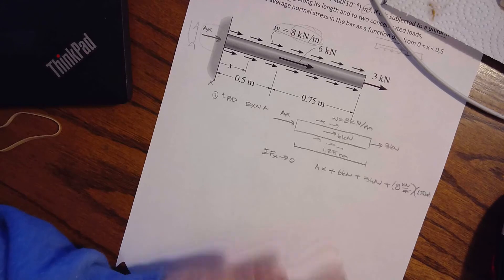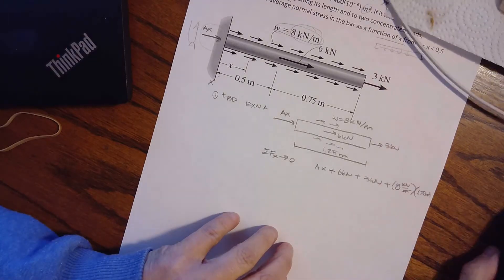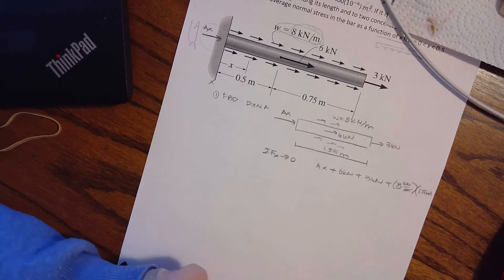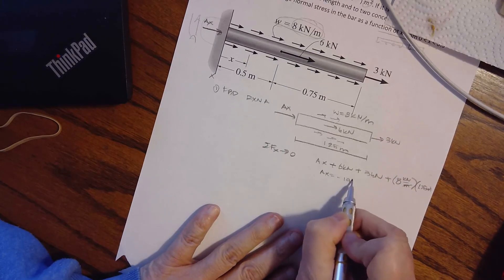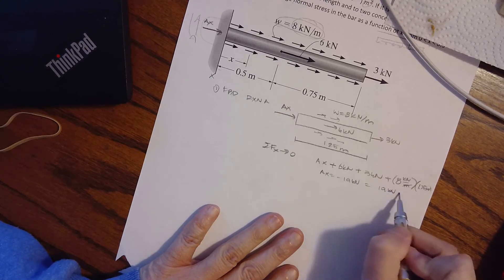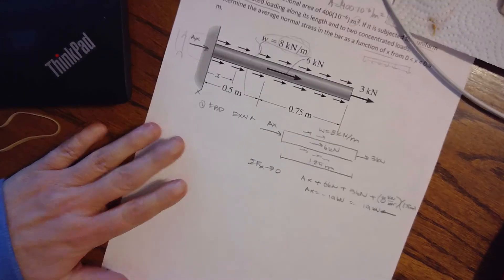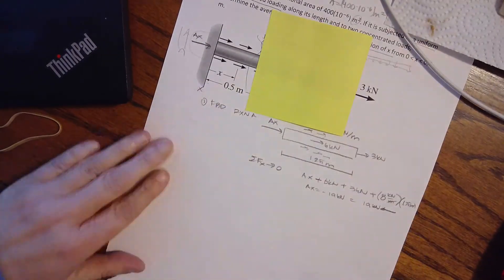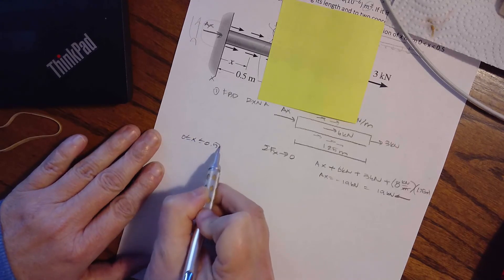This class, thermo, any class that you have, the easiest way to do problems, if you don't know what you're doing, is to look at the units. And look at that. They work out. So I'm going to get that AX equals negative 19 kilonewtons. That means that it equals 19 kilonewtons going back to the left. So now, I have to come up here, and I have to draw from zero to X to 0.5 meters.